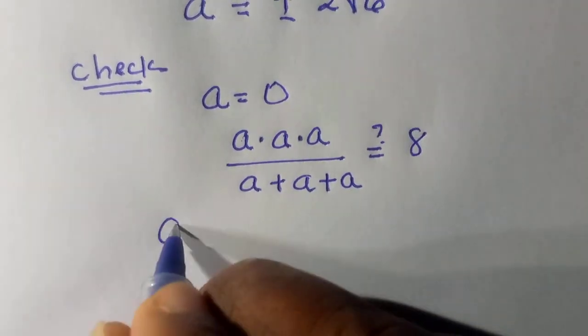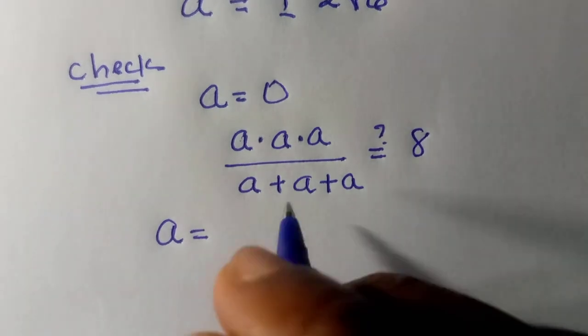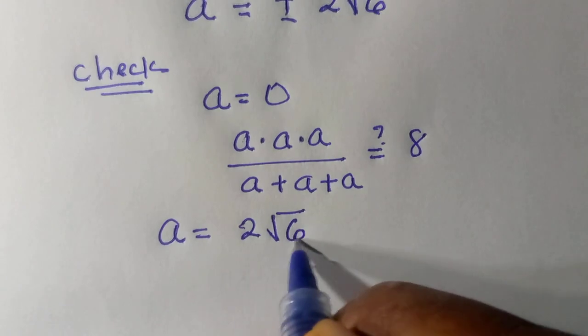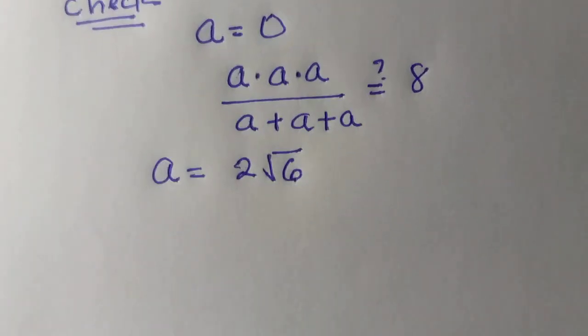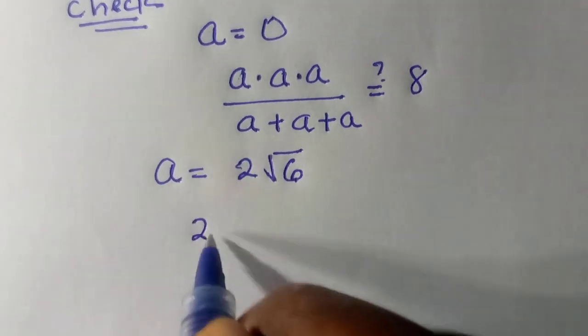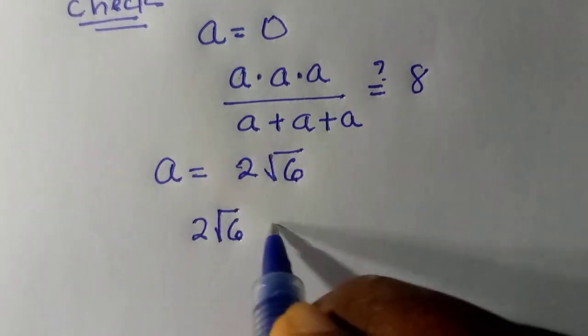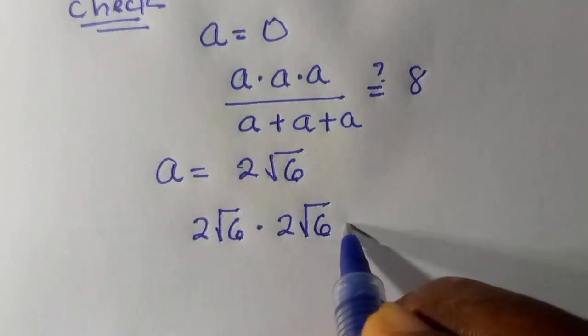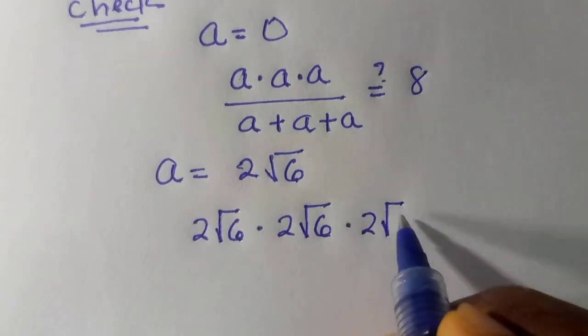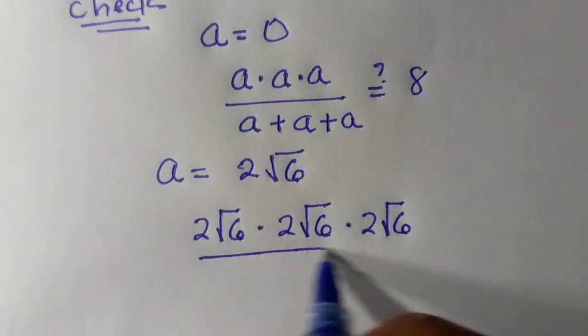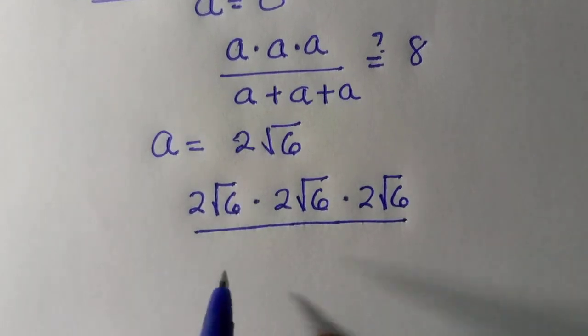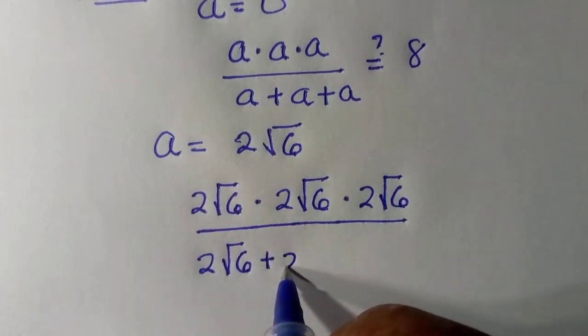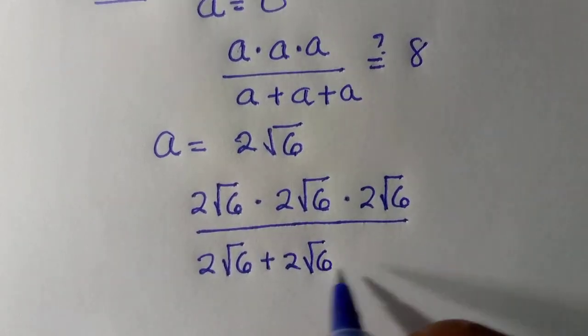And also, when we have a equals, since we have plus or minus, we test for plus, which is 2 root 6. So when we check for 2 root 6, substituting it here, we have 2 root 6 multiplied by 2 root 6 multiplied by 2 root 6 divided by 2 root 6 plus 2 root 6.